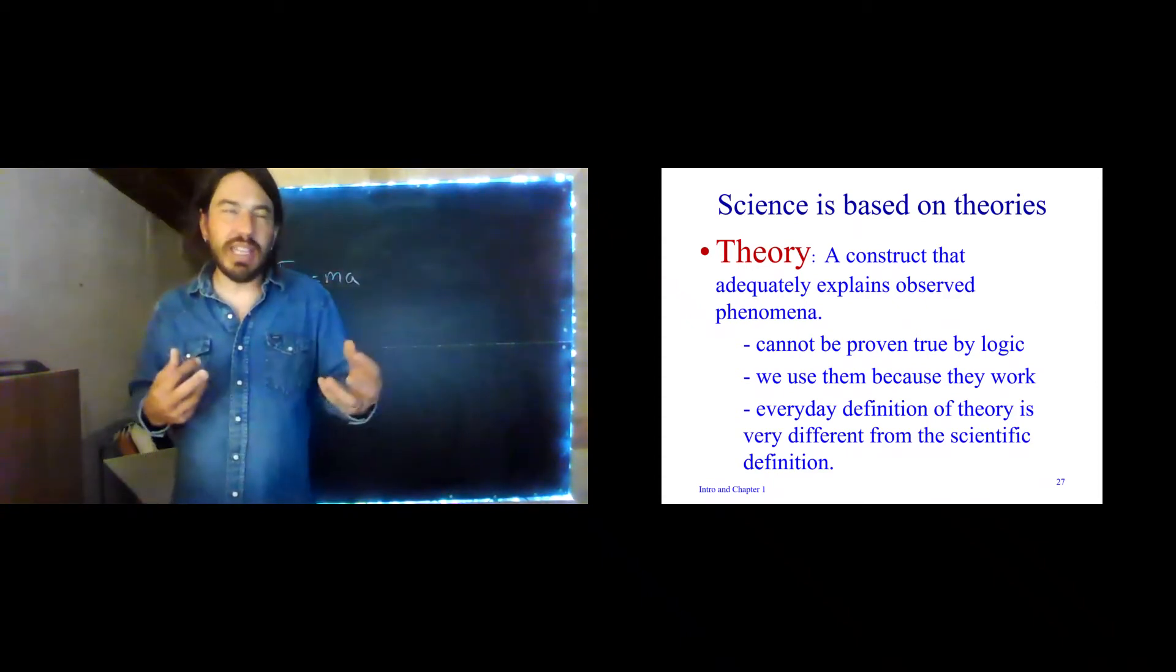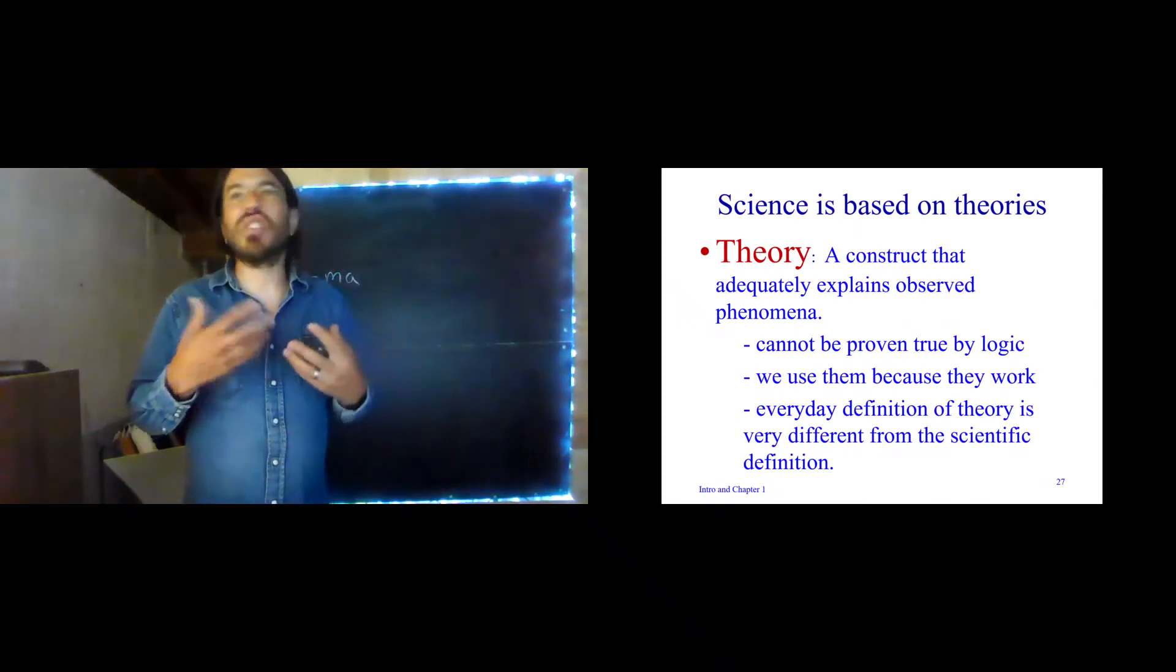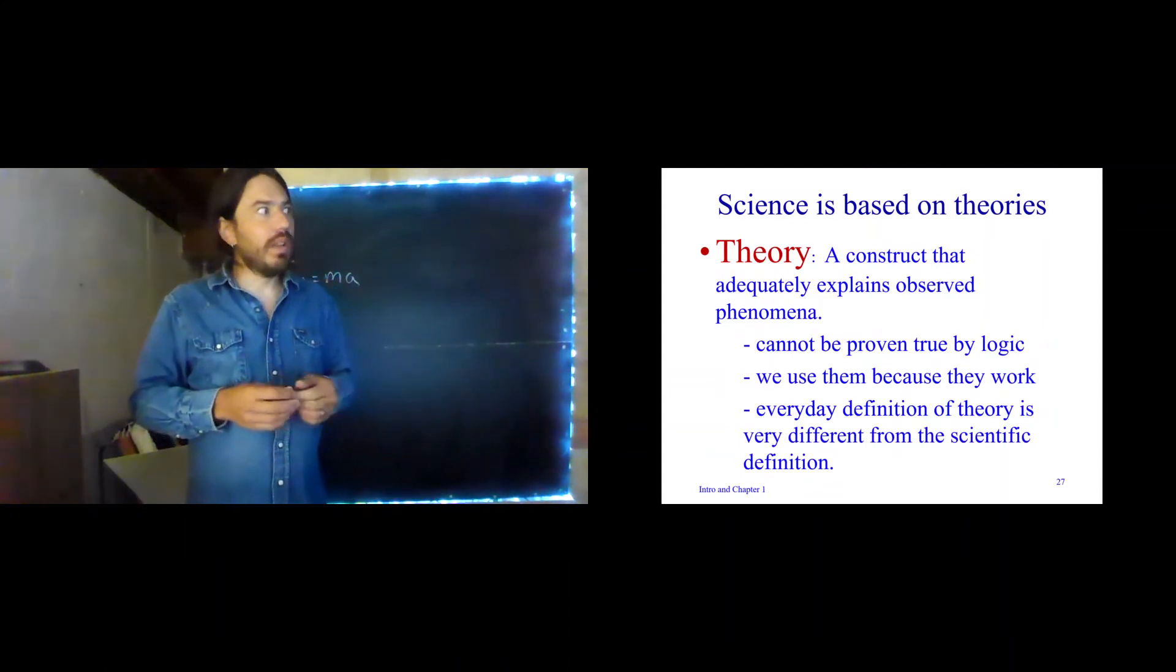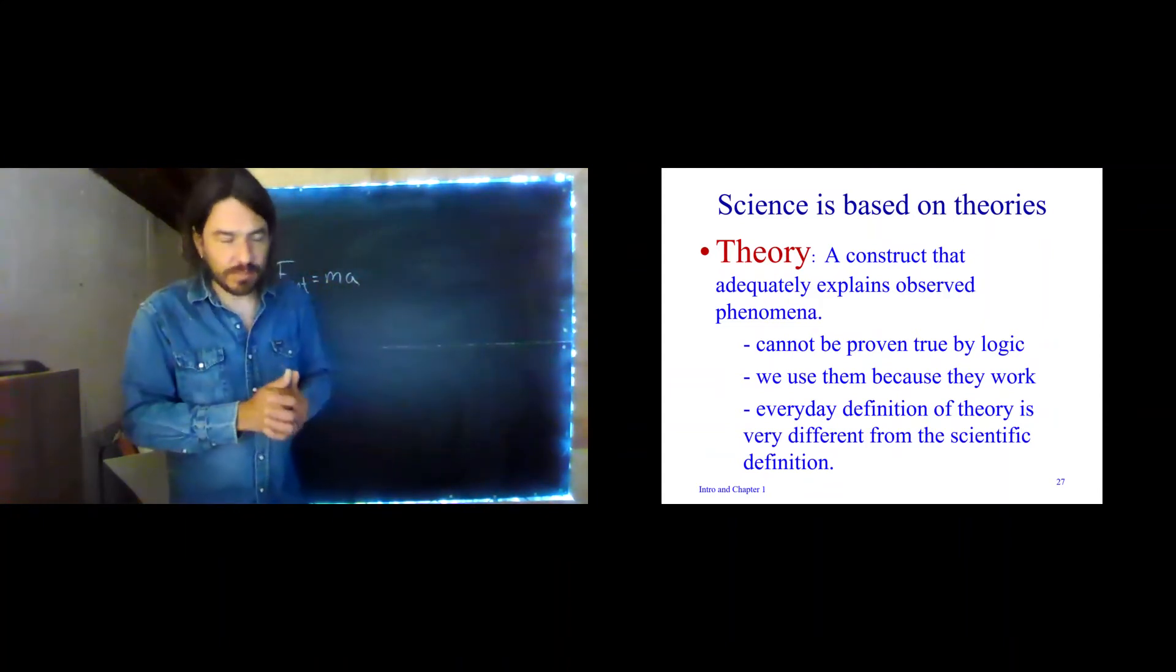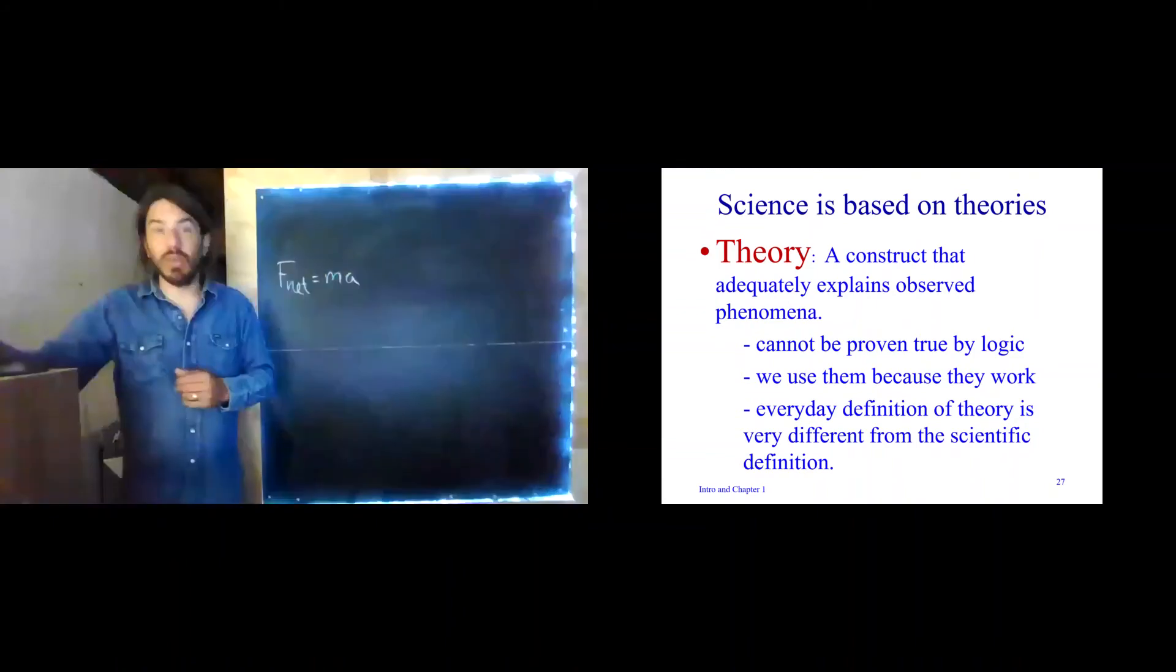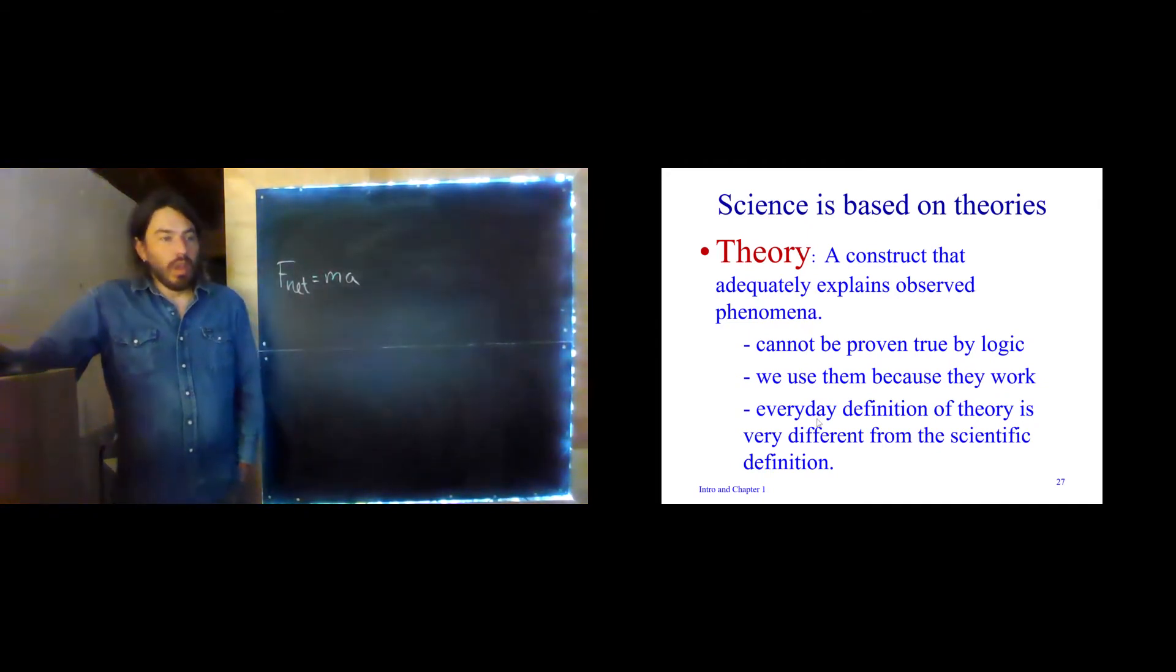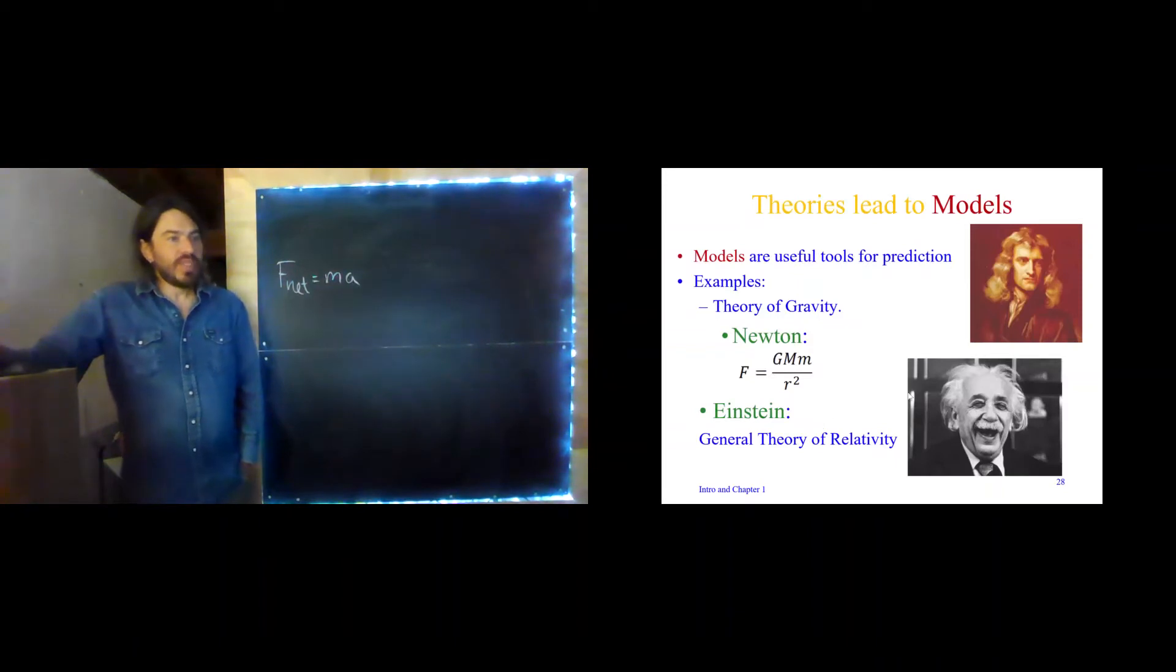The difference between a law and a theory is largely history and relevance and importance. We use them because they work. We don't think that this is truth with a capital T. We think this works with a capital W. These theories lead to models. Here's one model, this is a mathematical model. Here's another theory of gravity, this is Newton's model of gravity. Newton's model of gravity works fantastically. It works so well, it works really well to predict the motion of the planets.